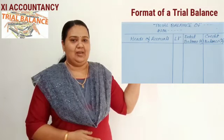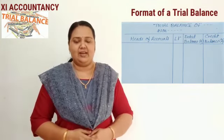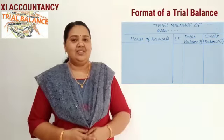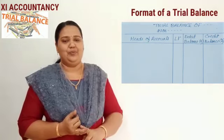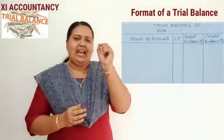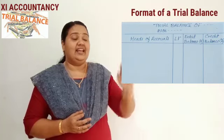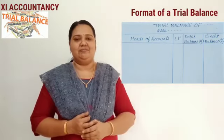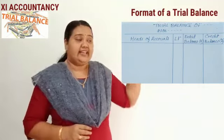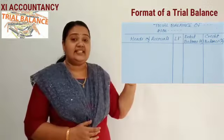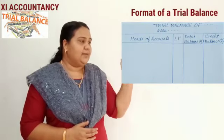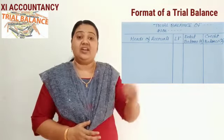Now let us see the format of a trial balance. Four columns are required: the first column is heads of accounts, second is ledger folio, the third column is debit balance amount, and the last column is credit balance amount. In the first column we write the heads of each account, in the second we write ledger folio, in the third the debit balance amount, and in the last the credit balance amount.